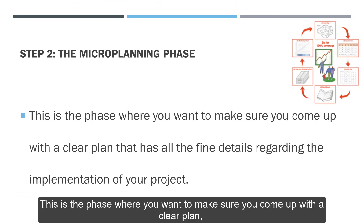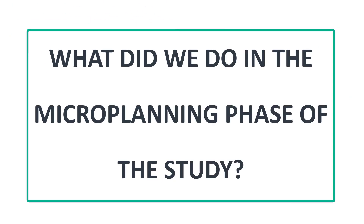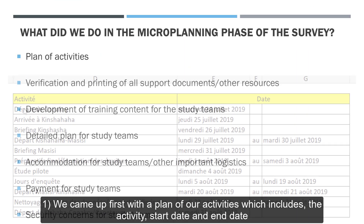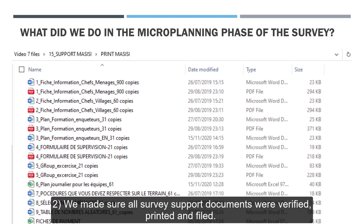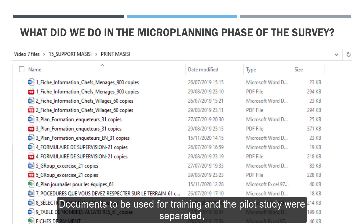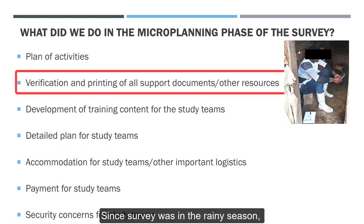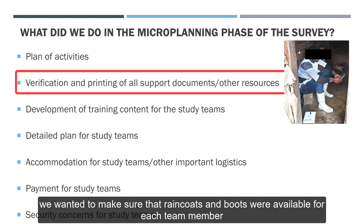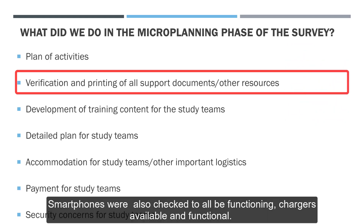The micro-planning phase is where you want to make sure you come up with a clear plan that has all the fine details regarding the implementation of your project. We came up first with a plan of activities which includes the activity, start date and end date. We made sure all survey support documents were verified, printed and filed, and documents to be used for training and the pilot study were separated from those for the actual implementation. Since the survey was in a rainy season, we made sure raincoats and boots were available for each team member, identification shirts were available, and smartphones were checked to be all functioning with chargers available and functional.